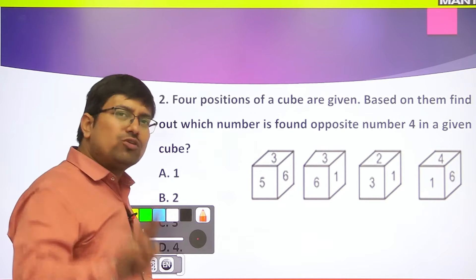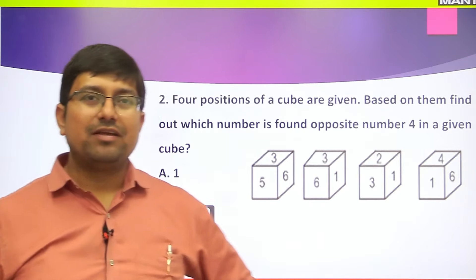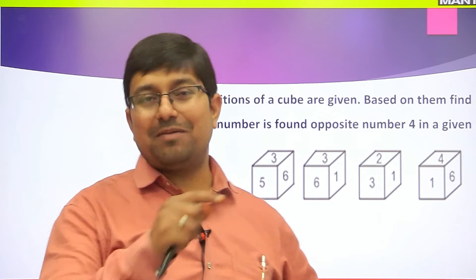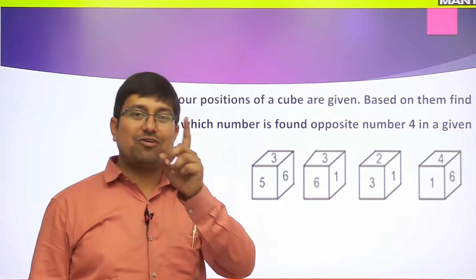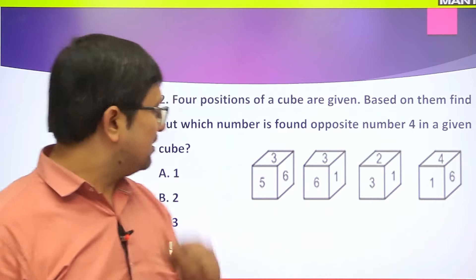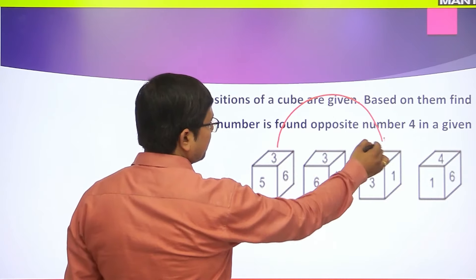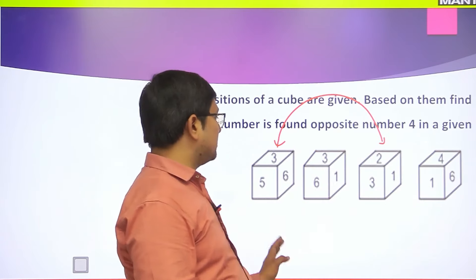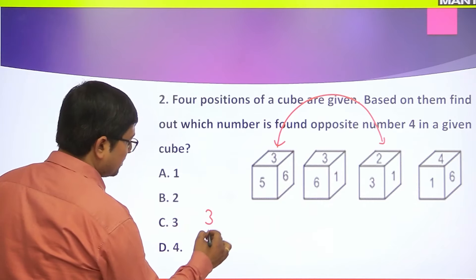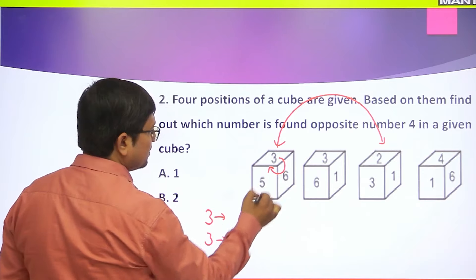I will show you two methods. Using the first property: if two or more positions of the same dice are given and they have exactly one common face, we can determine all three pairs of opposite faces. Looking at two of the figures, the only common face is 3. Start from 3 and go clockwise in both. From 3 → 6 → 5, and in the other: 3 → 2 → 1.